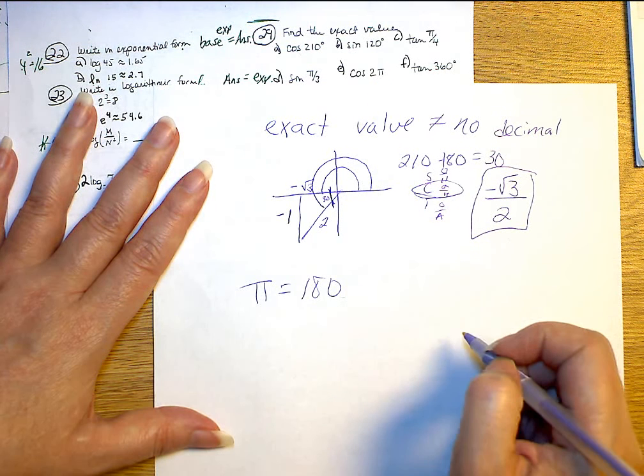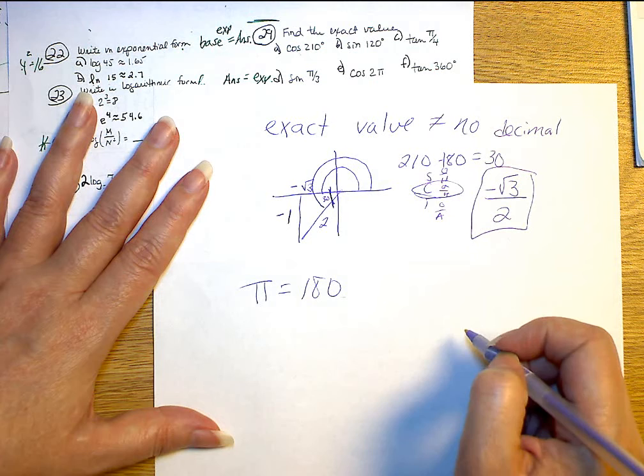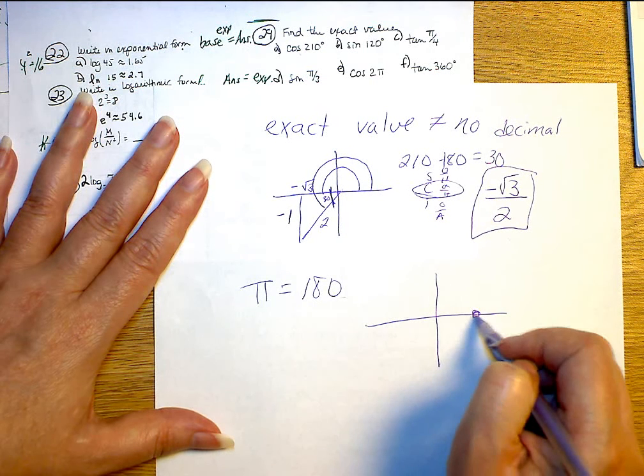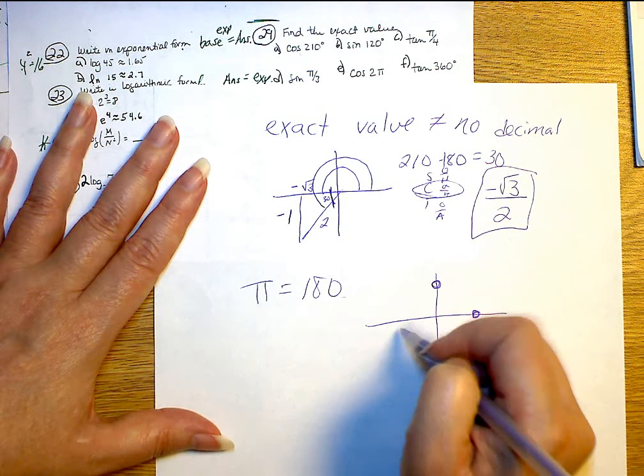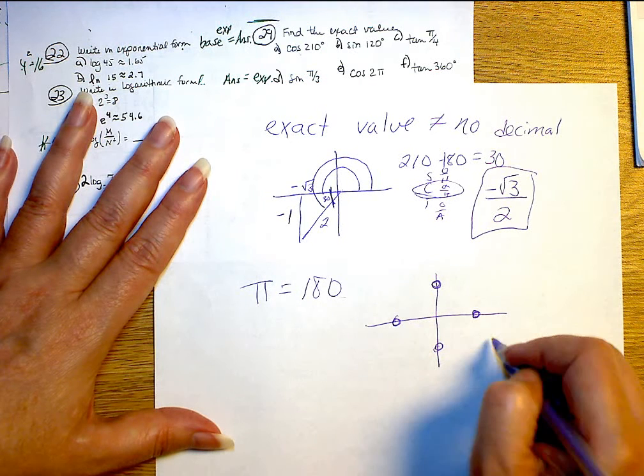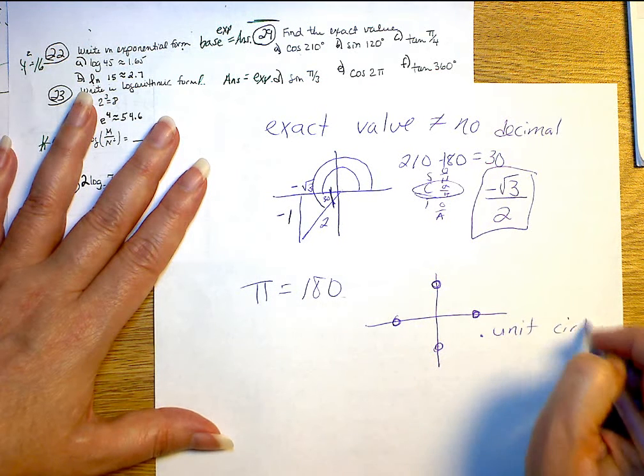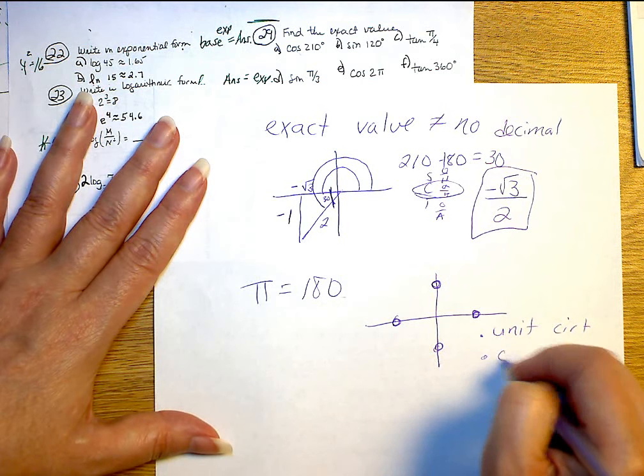After you are finding your angles, if ever you fall on your axes, you have one of two choices. You have a choice to go to the unit circle or plug it into your calculator.